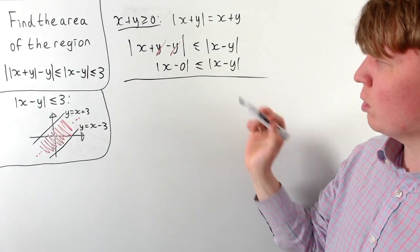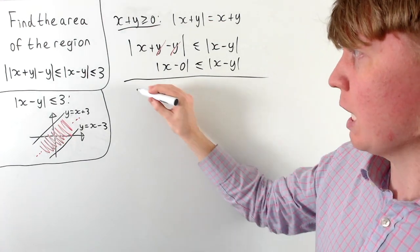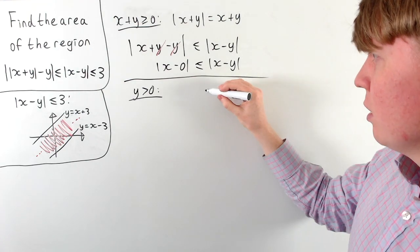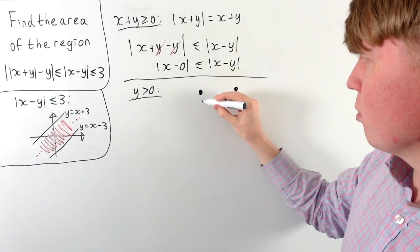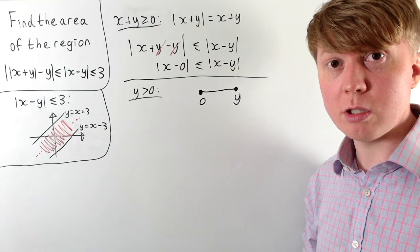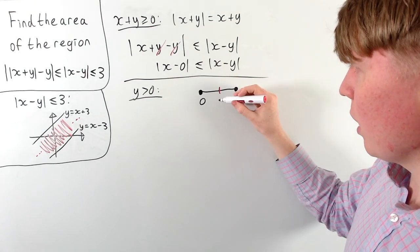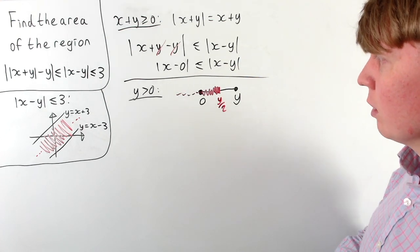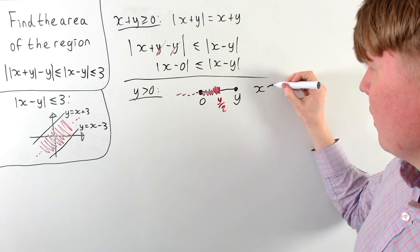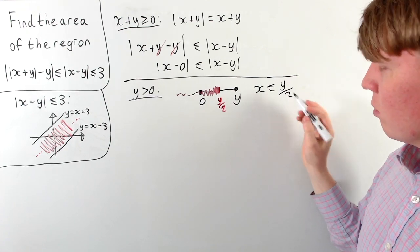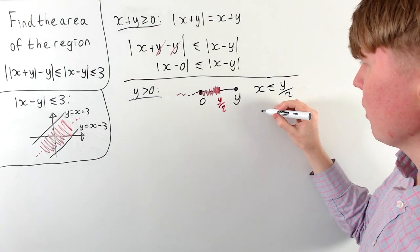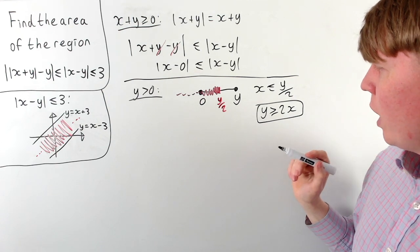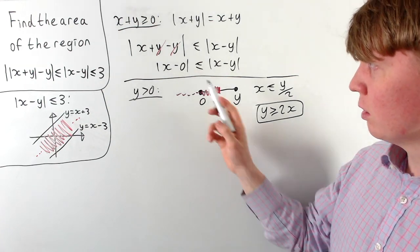This means x has to be closer to 0 than it is to y. We'll consider the picture slightly differently if y is positive or negative. If y is positive, on a number line we fix a positive y to the right of 0. In order for x to be closer to 0 than to y, we need x to be less than or equal to y over 2, which rearranges to y is greater than or equal to 2x. So when y is positive, we need y greater than or equal to 2x.